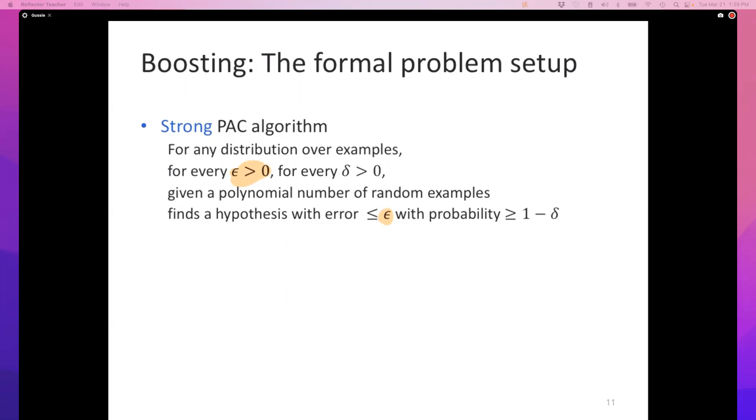The reason I'm calling this a strong PAC algorithm is because this is true for any error, arbitrarily small. If you want an error of no more than 0.1, this algorithm will give you that. If you want no more than 0.01, this algorithm will give you a classifier. If 0.01 is too high, let's make it 10^-10.